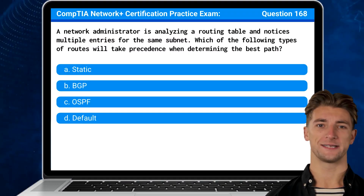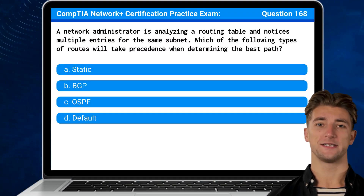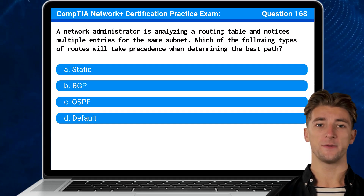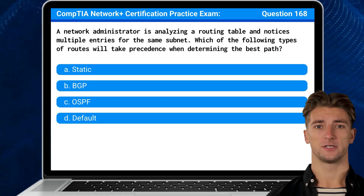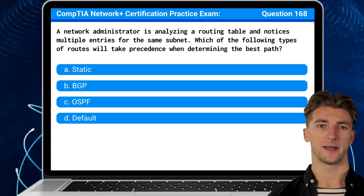Question 168. A network administrator is analyzing a routing table and notices multiple entries for the same subnet. Which of the following types of routes will take precedence when determining the best path?